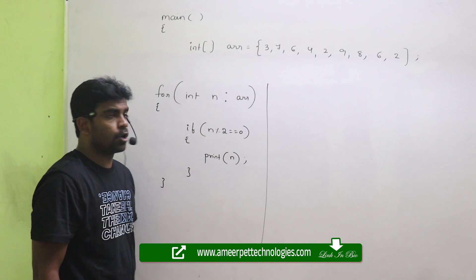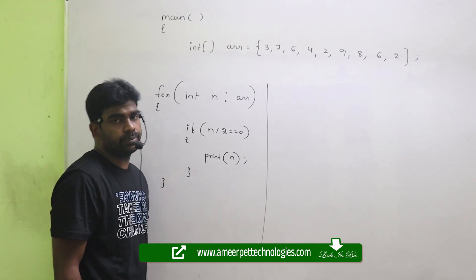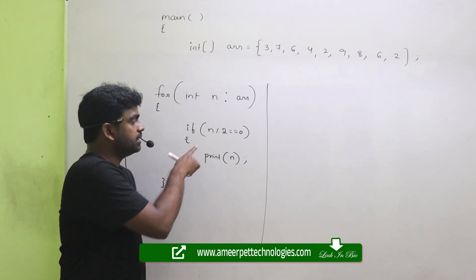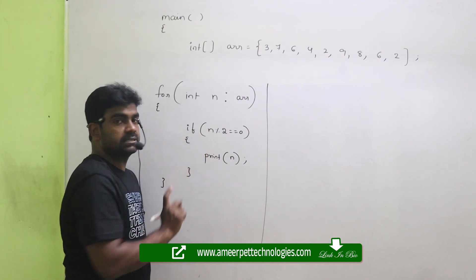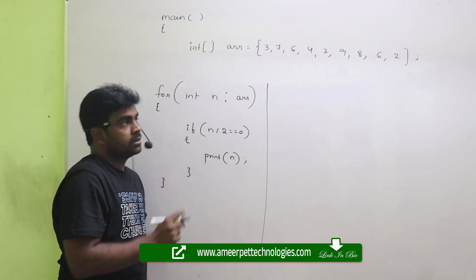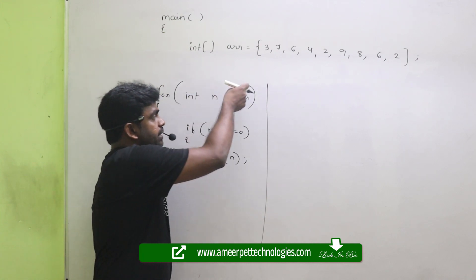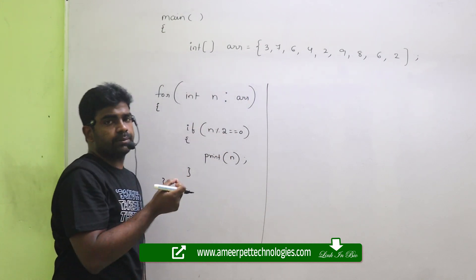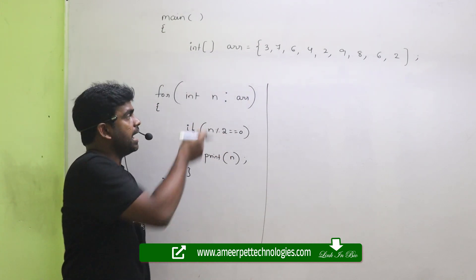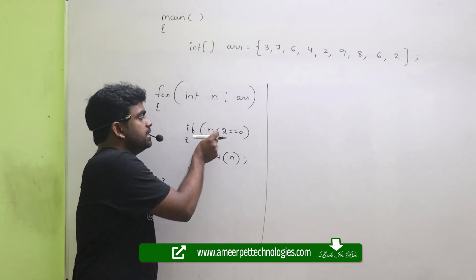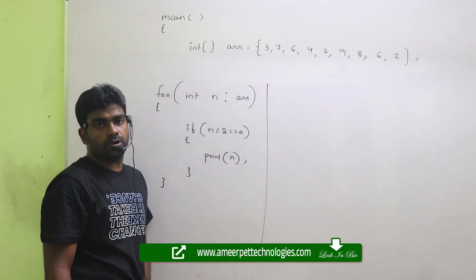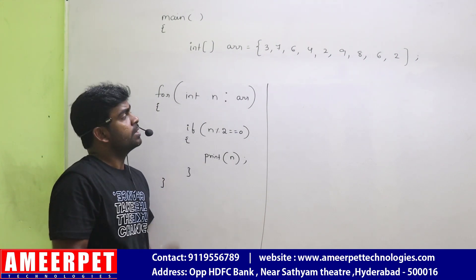If it is not even, don't print — just print even numbers. So using the for-each loop, we are getting each number and checking whether that number is even or not. It's nice.